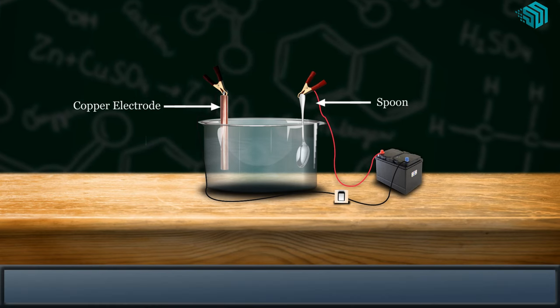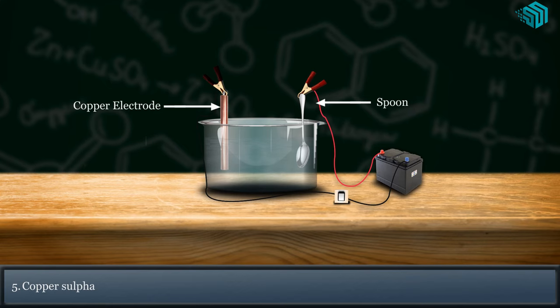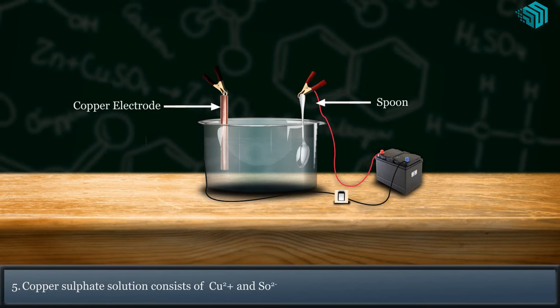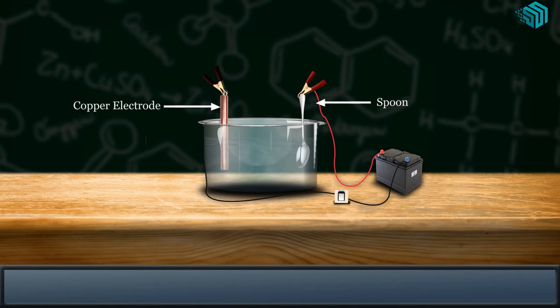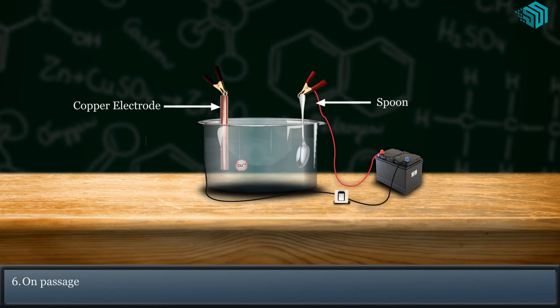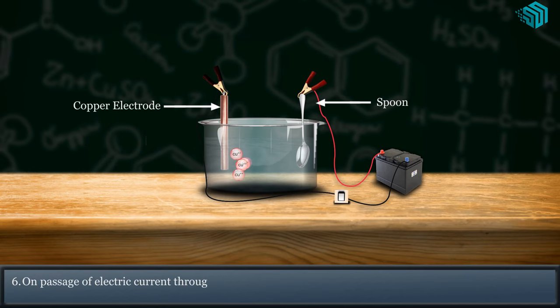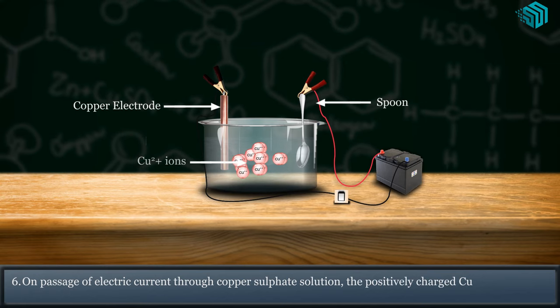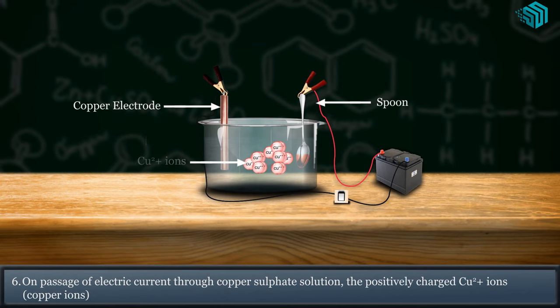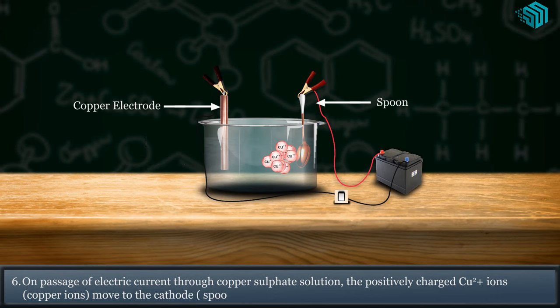Copper sulfate solution consists of Cu²⁺ and SO₄²⁻ ions. On passage of electric current through the solution, the positively charged Cu²⁺ ions (copper ions) move to the cathode, which is the spoon.